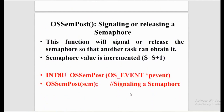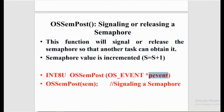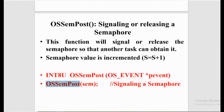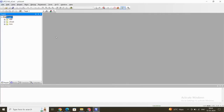OSSemPost signals or releases a semaphore so that another task can obtain it. When this function is executed, the semaphore value is incremented. The syntax for OSSemPost takes one input argument — a pointer to the OS_EVENT data structure. In code, we write 'OSSemPost(semaphore)'.